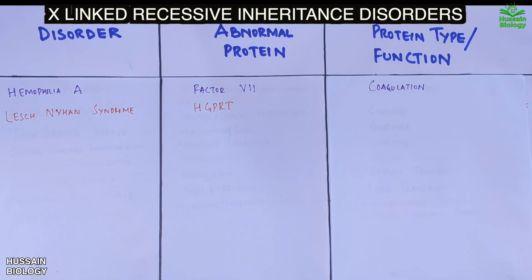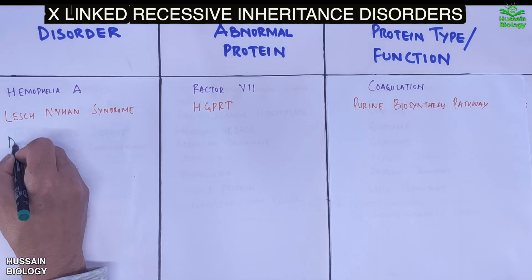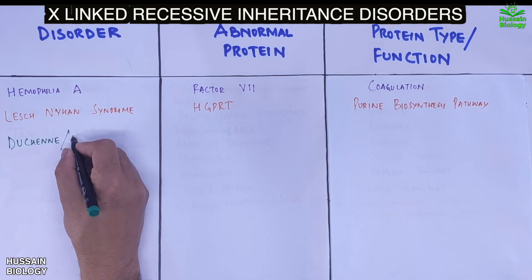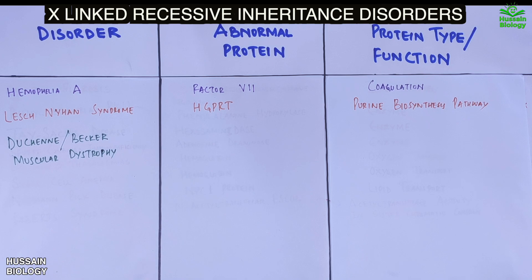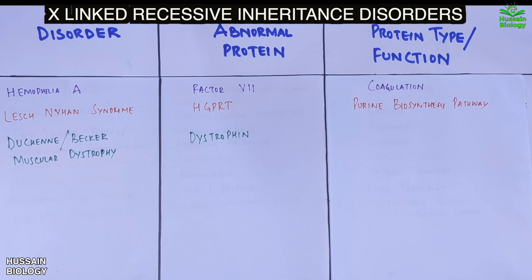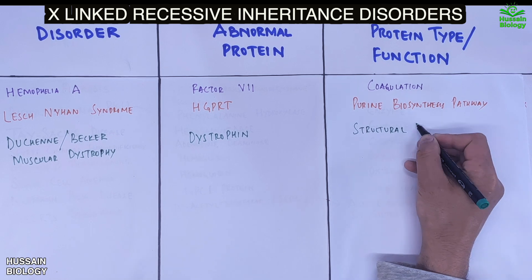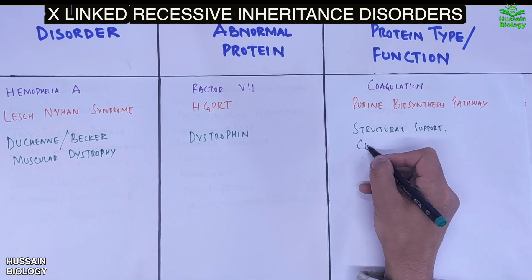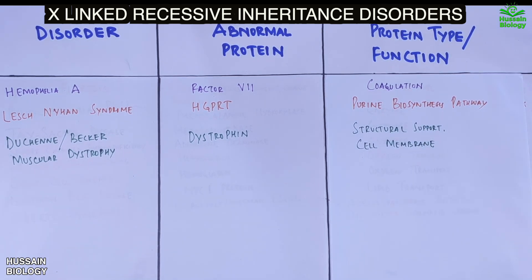Finally, we have Duchenne or Becker muscular dystrophy, where abnormal dystrophin protein disrupts its normal roles in structural support and cell membrane integrity.